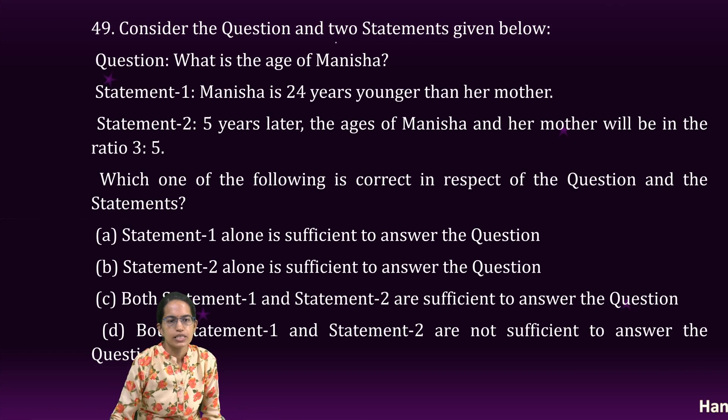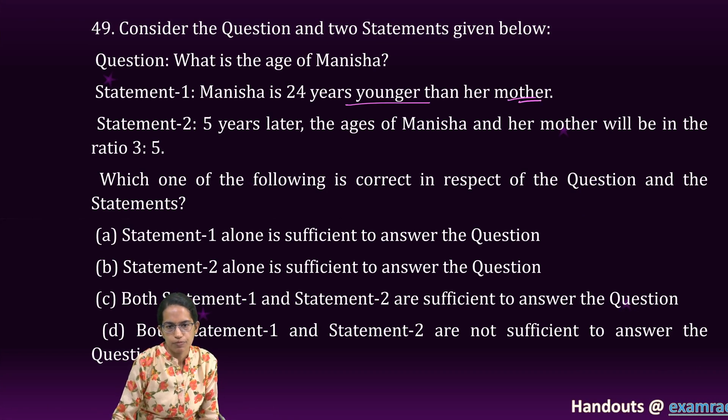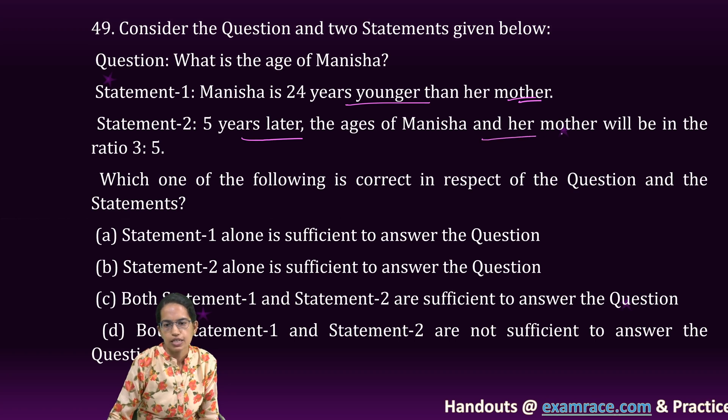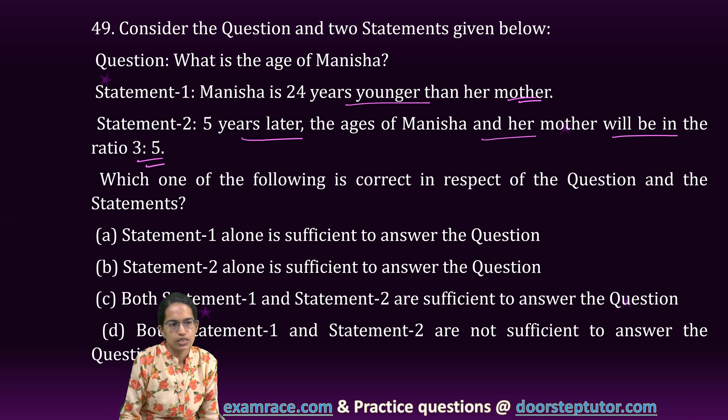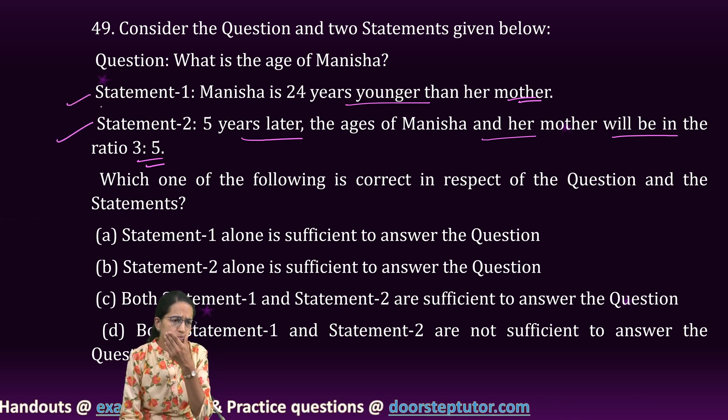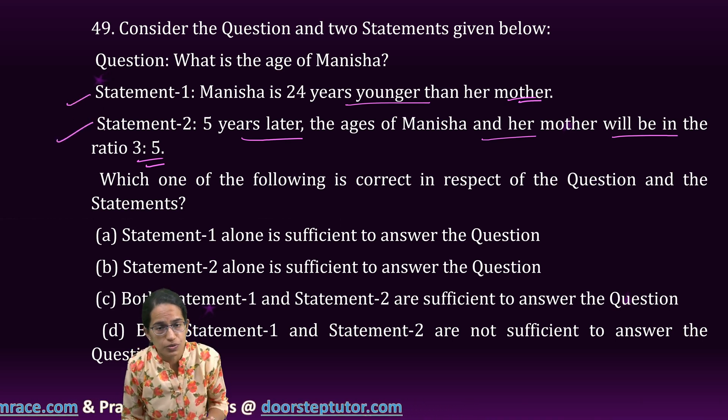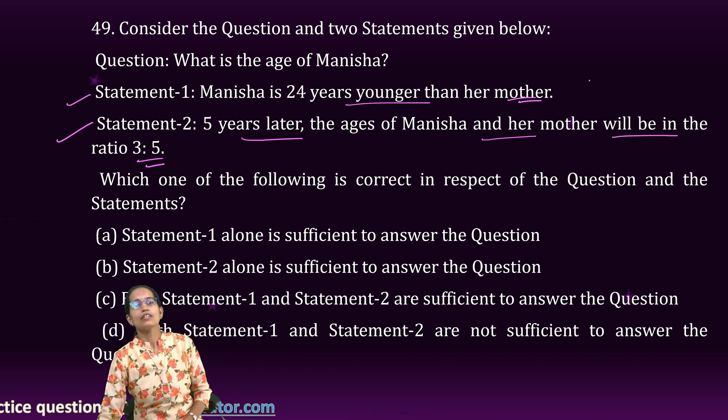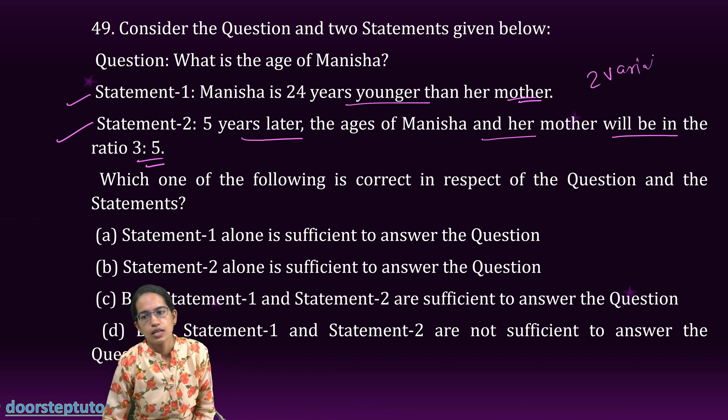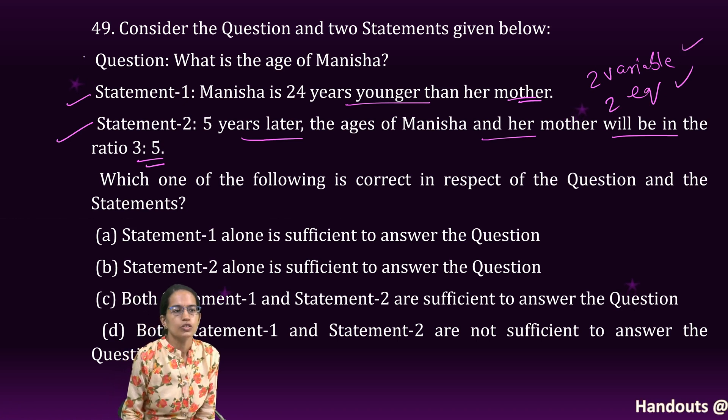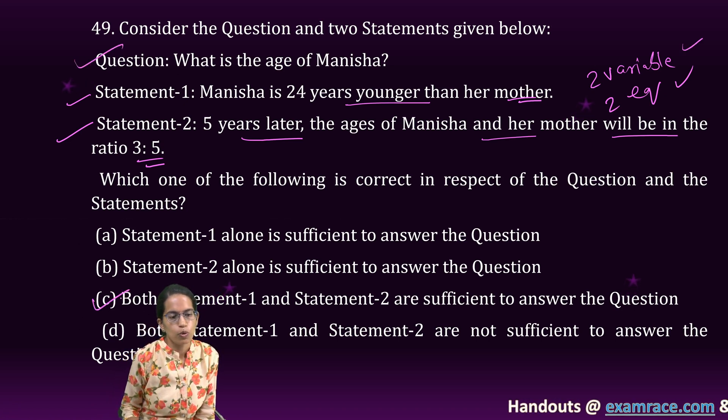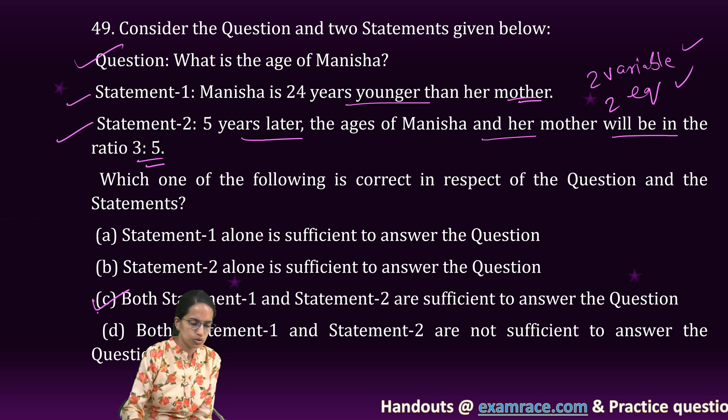The next question: if Manisha is 24 years younger than her mother and 5 years later, the age of Manisha and her mother are in the ratio 3 is to 5. Now I have two persons and two equations from each statement 1 and 2. No need to solve it. No need to land to the answer. We understand two variables and two equations. Then yes, we can solve those. So we can find out the age of Manisha. So both the statements here are sufficient to answer this question.